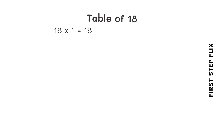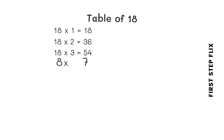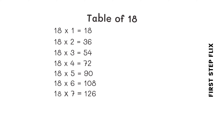Let's repeat one more time. 18 ones are 18. 18 twos are 36. 18 threes are 54. 18 fours are 72. 18 fives are 90. 18 sixes are 108. 18 sevens are 126.